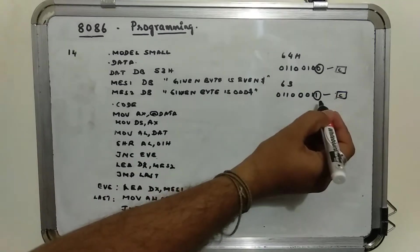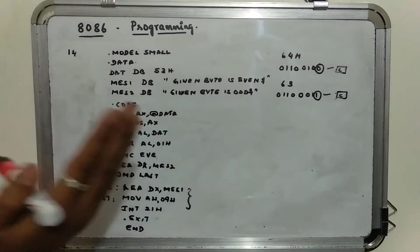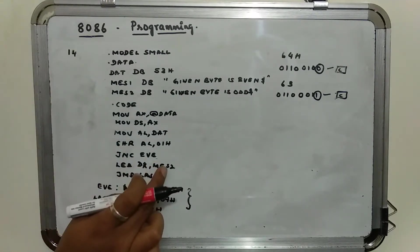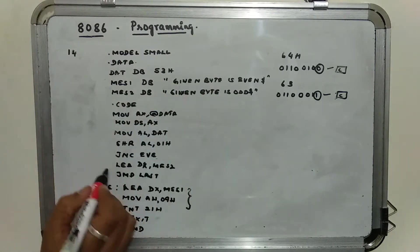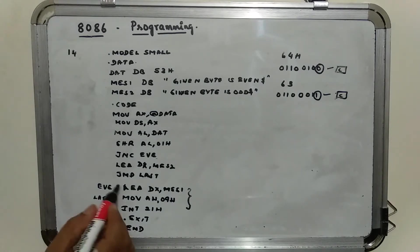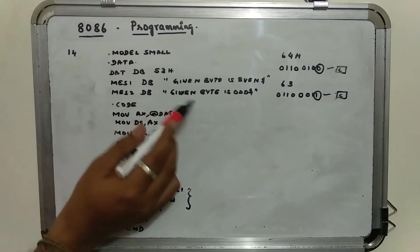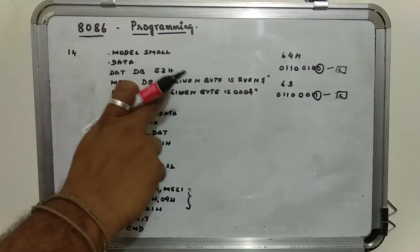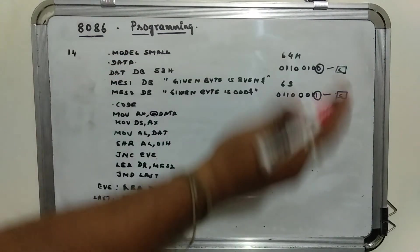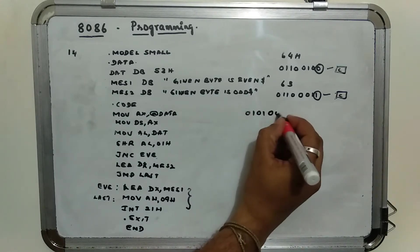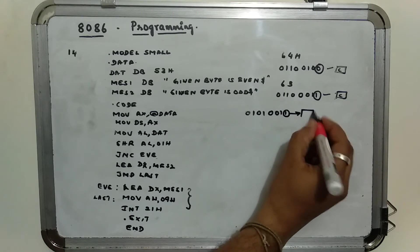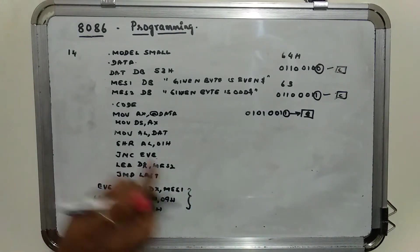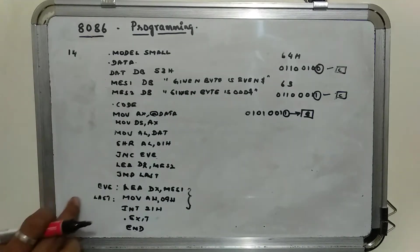If there is a carry (carry means 1), one shift is enough to check whether the number is even or odd. So if there is a carry, it is an odd number. Load DX with the address of message 2, then jump directly to 'last' so that you will not print the first string. Move AH 09H, INT 21H and exit. Since the number is 53h — which is 01010011 in binary — if you shift right, the LSB bit 1 will go and set in carry flag, so carry flag will be 1. Jump on no carry is not valid, so it will load message 2 'given byte is odd', jump to last, and display.